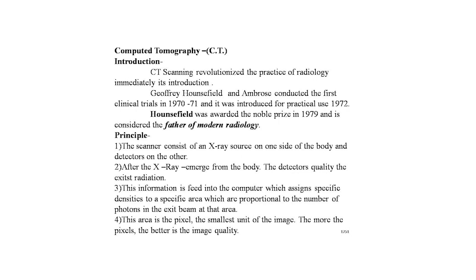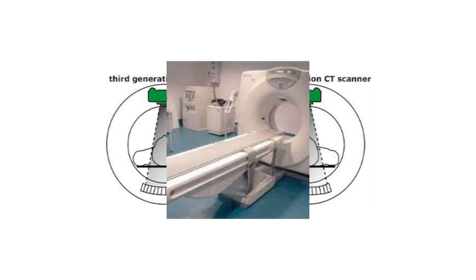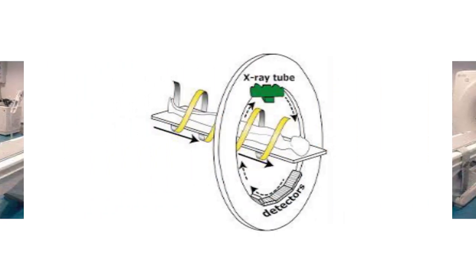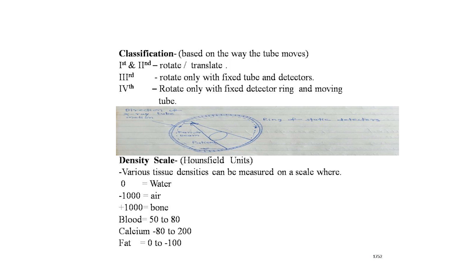Each area is a pixel — the smallest unit of the image. The more pixels, the better the image quality. Here is a picture of the CT scan machine. The x-ray tubes are arranged in a circle with detectors, and the patient is positioned on the table. This shows the third generation CT scanner.